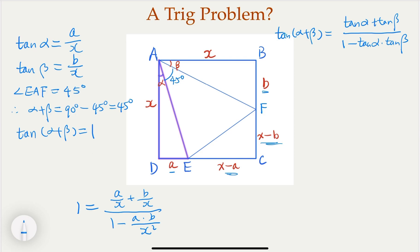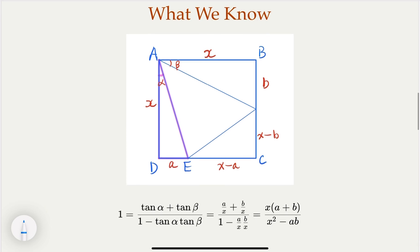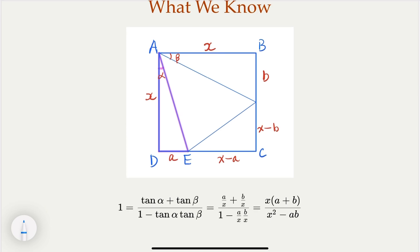Let's recap here. So what we know so far is this. If we rewrite this, what we have is x times a plus b would equal to x squared minus ab. Let's rewrite it as x squared minus x times a plus b would equal to ab. So that is given from the fact that alpha plus beta equals 45 degrees.